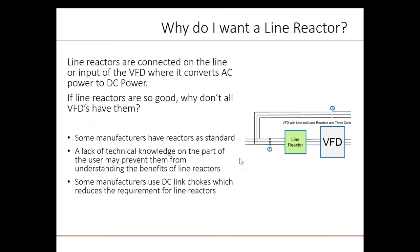Line reactors are found on the line, or input, of the VFD, where it converts AC power to DC power. A line reactor will have the effect of reducing current harmonics from the VFD flowing back toward the power system. A line reactor will also have the effect of reducing voltage transients coming from the power system that could impact operation of the VFD. If line reactors are so good, why don't all VFDs have them? Well, some VFD manufacturers do have line reactors as standard. If the user is not well-versed in the effects of poor power quality, then they may not see the benefit. If they can't see the cost-benefit justification, they will leave them out of their specification.